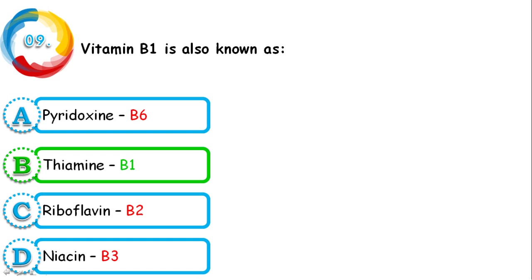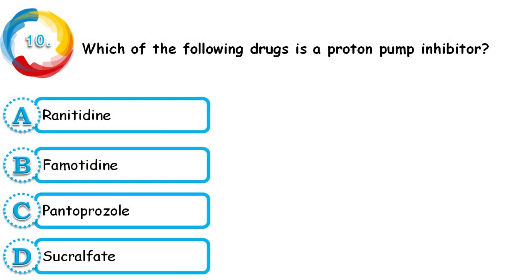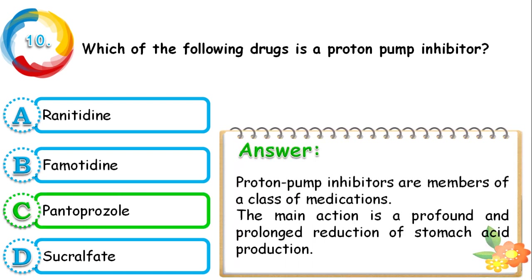Question 10: Which of the following drugs is a proton pump inhibitor — ranitidine, famotidine, pantoprazole, or sucralfate? The correct answer is pantoprazole. Its main action is a profound and prolonged reduction of stomach acid production. Ranitidine and famotidine come under the group of histamine H2 receptor antagonists.